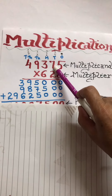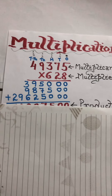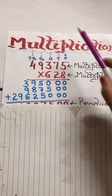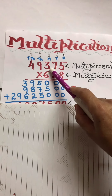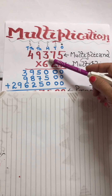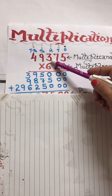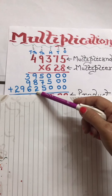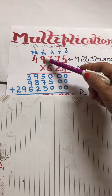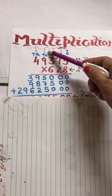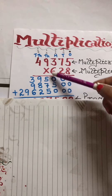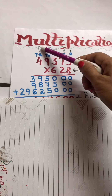6 sevens are 42, plus 3 is 45, so you will write 5 here and 4 carried over. 6 threes are 18, and 18 plus 4 is 22, so you write 2 here and 2 carried over. 6 nines are 54, and 54 plus 2 makes 56, so you write 6 with 5 carried over. 6 fours are 24, and 24 plus 5 makes 29.